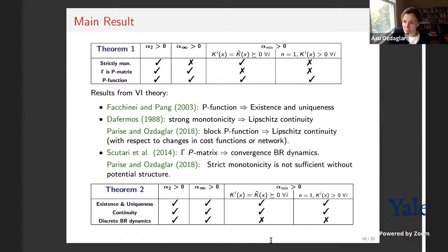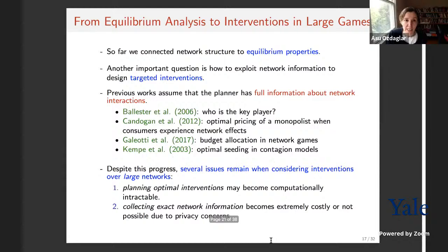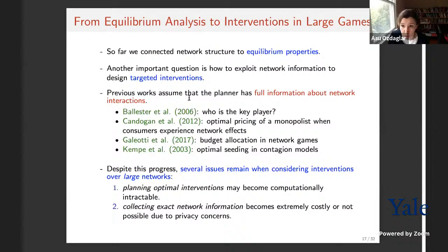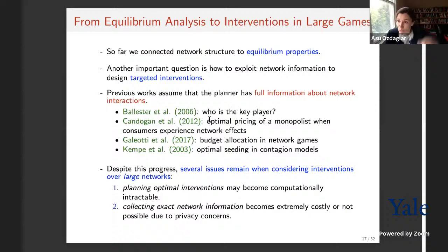Let me now move to interventions. I started by saying that analyzing equilibria is the main goal leading to intervention design. How can we do incentive design? There is a lot of beautiful work in the literature studying targeted interventions: the key player paper of Ballester identifying which player's removal most impacts social welfare, and work on pricing for a monopolist when consumers experience network effects. A recent paper by Galeotti, Goyal, and Gollup on budget allocation in network games is one we will heavily build on.